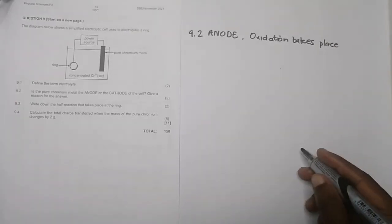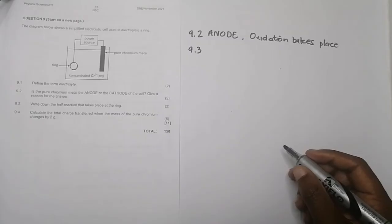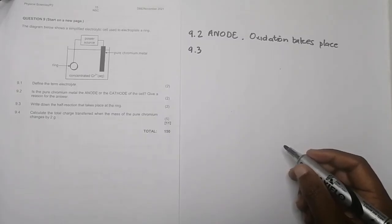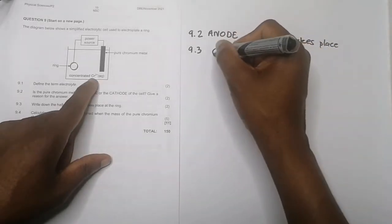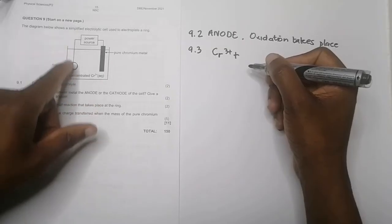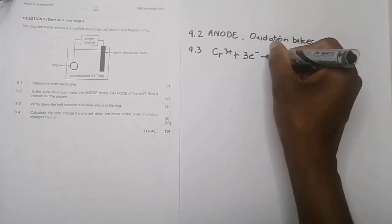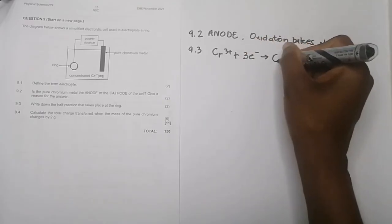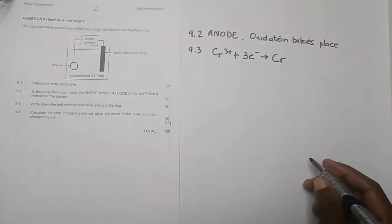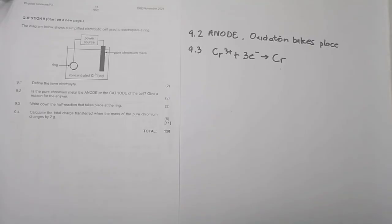Question 9.3: write down the half reaction that takes place at the ring. Remember those chromium three plus ions, Cr³⁺, receive electrons. This is connected to the negative side of the cell, so it undergoes reduction and becomes Cr.